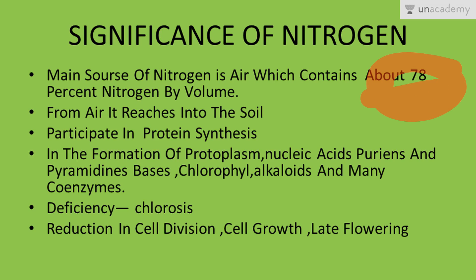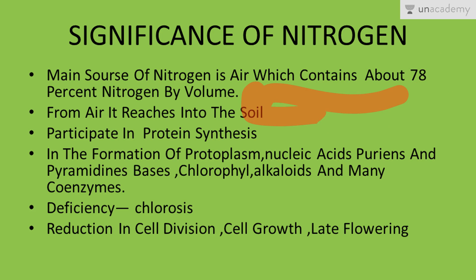About 78% of nitrogen is present in our atmosphere by volume, but this nitrogen cannot be used by plants directly. It must first be converted into a usable form. From the atmosphere it goes into the soil, where microorganisms convert it into a usable form that can then be utilized by plants.